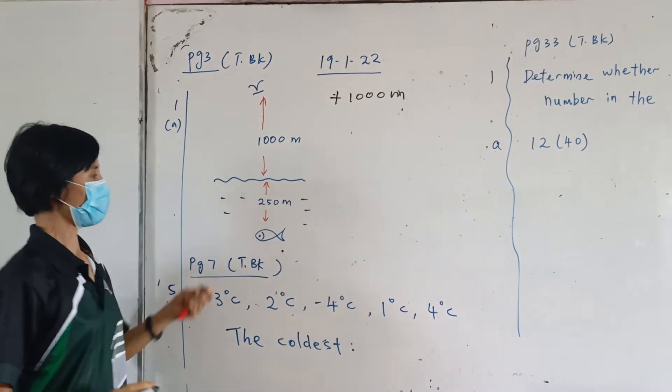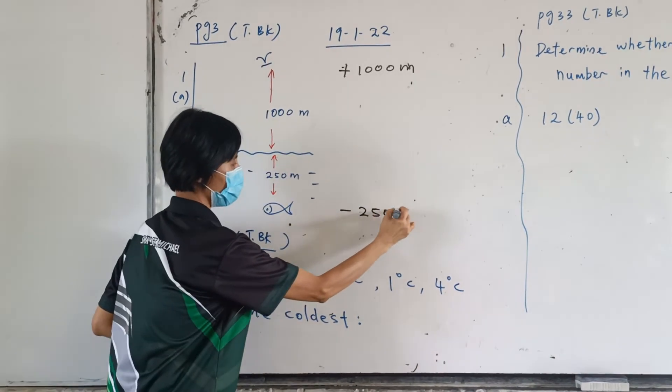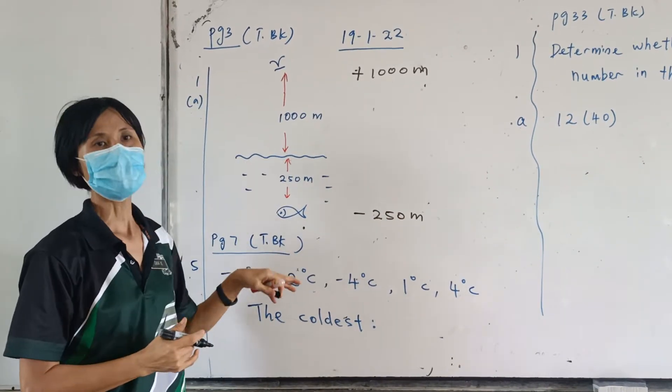Positive, 1,000 meters. This one, positive 1,000. How about the fish? Negative, 250 meters. Because below sea level.